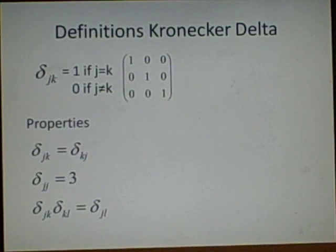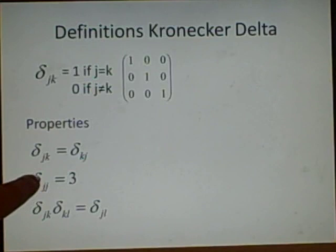And properties. You can reverse the identities. So we'll have delta jk equals delta kj. If we have doubles, like I said before, we have delta jj.